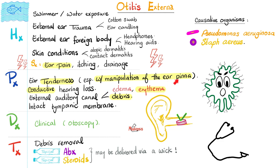Try manipulating the patient's auricle and it's going to hurt, because it's part of the external ear — otitis externa. Conductive hearing loss can happen. Get your otoscope and look into the ear; you'll find debris, edema, and erythema in the external ear, not the middle ear. The tympanic membrane is healthy, intact, and spared. Diagnosis is clinical. The organisms are Pseudomonas and Staph aureus. Management is to remove the debris, apply topical antibiotics, and topical corticosteroids.